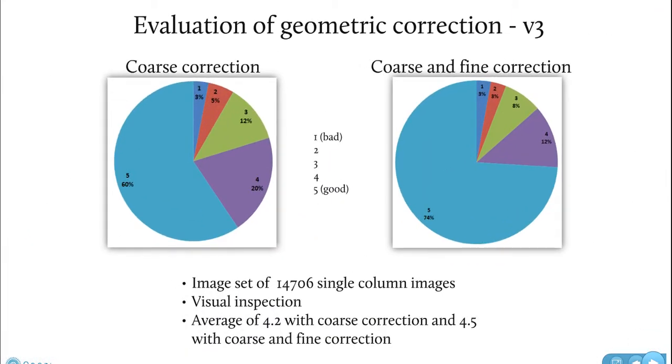How did we evaluate the geometric correction? Well, this is for version 3, which is the previous one, where we've used an image set of almost 15,000 single column images with visual inspection. And we used both coarse correction and coarse and fine correction, where 1 is bad and 5 is good, and 5 is the lighter blue one in this image. And that gives us an average of 4.2 with coarse correction and 4.5 with coarse and fine correction.